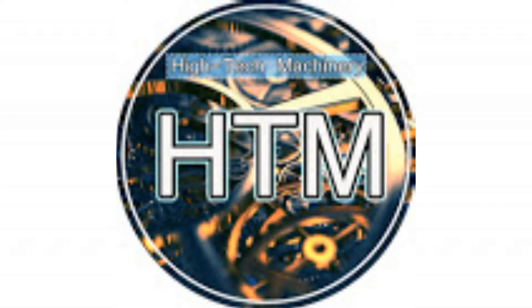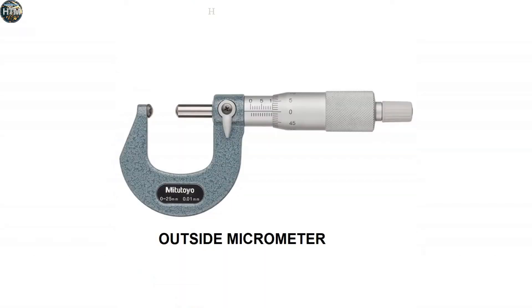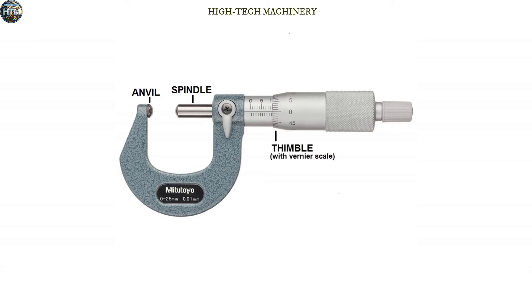Welcome to High-Tech Machinery. Today we will discuss and learn about the outside micrometer. The main parts of a micrometer are the anvil, spindle, thimble with vernier scale, sleeve with main scale, and ratchet knob.